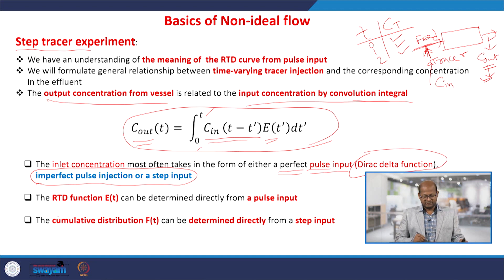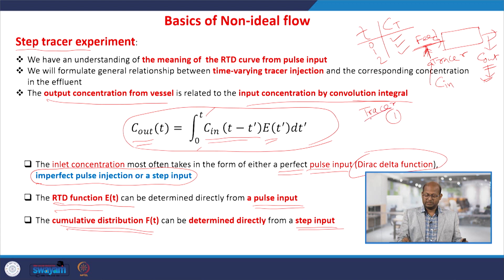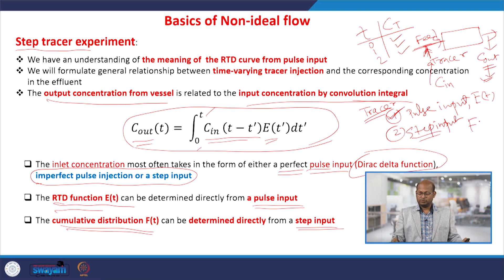The RTD function E(t) is for pulse input, and the cumulative distribution function F(t) is expressed for step input. The tracer test can be conducted by pulse input — just one injection — from which we get the residence time distribution E(t). For step inputs, we will get F(t), which is the cumulative distribution function.